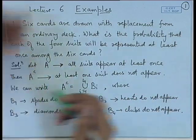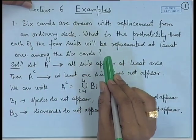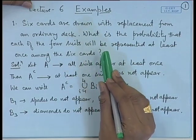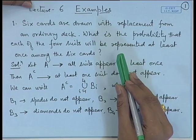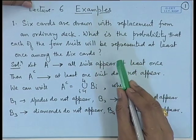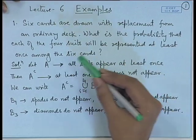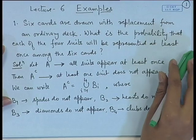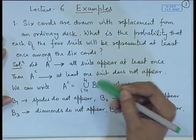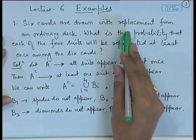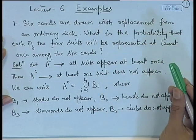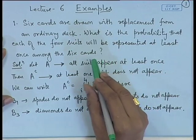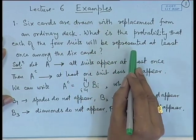We assume the deck is well shuffled. There are 52 cards and 4 suits: spade, heart, diamond, and club. We draw a card, note the suit, put it back, and draw again — this is sampling with replacement. The event of interest is that out of 6 cards drawn, all 4 suits are represented at least once.